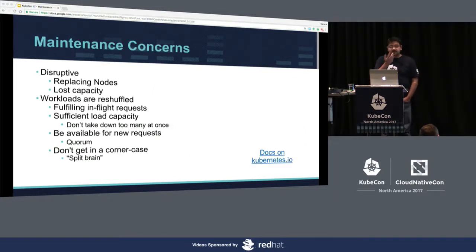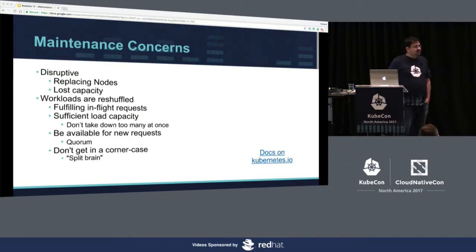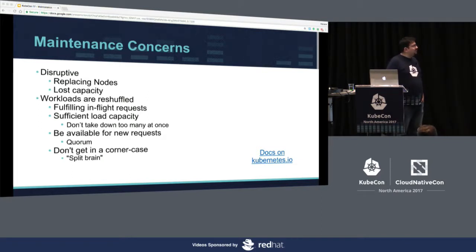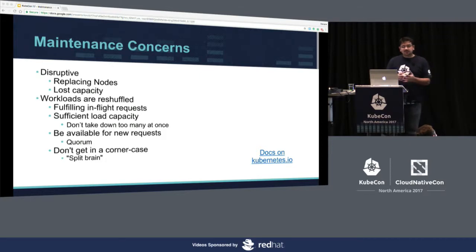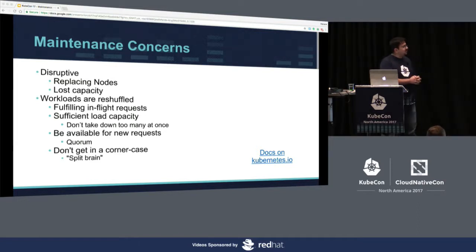The primary concern about maintenance is that it's fundamentally disruptive. You need to replace a node to change the kernel — nodes need to be either rebooted or replaced. When you do that, you fundamentally take out capacity and your pods get shuffled. When a pod is going down, you need to be sure it fulfills any incoming requests and requests already in-flight — it could take an hour to fulfill a request. You want to be sure you have enough capacity and no downtime.